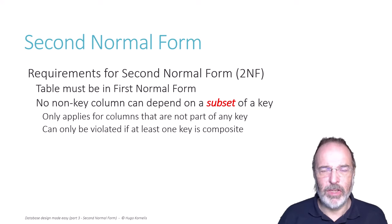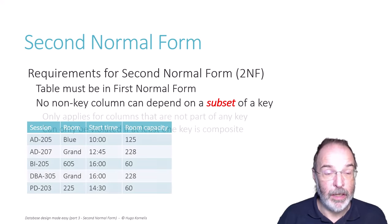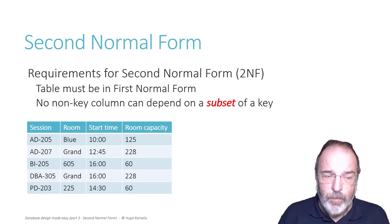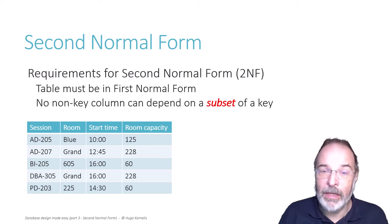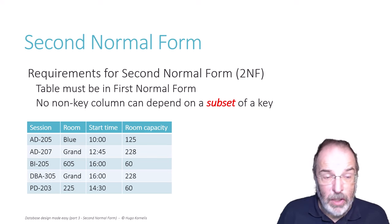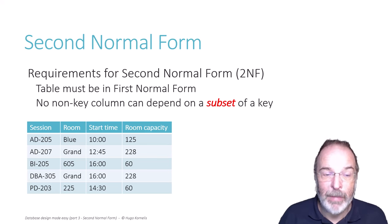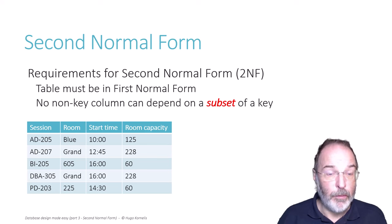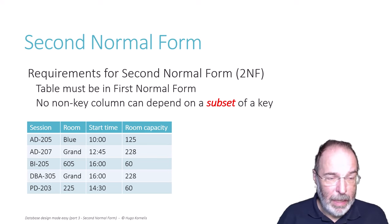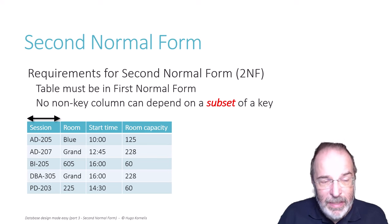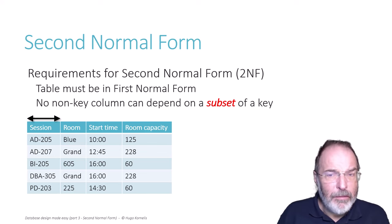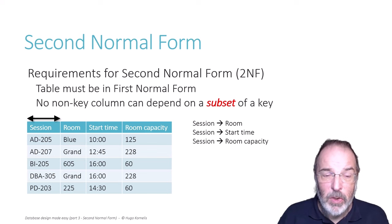But let's look at an example of a table where second normal form violations are definitely possible. This once more is our conference example, where we have sessions scheduled to take place in one of the conference rooms, starting at a certain time. We are also interested in the maximum capacity of each room so that we don't get into a problem with the fire department for letting too many people into the room.